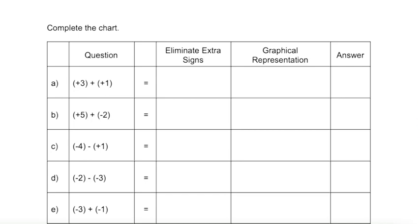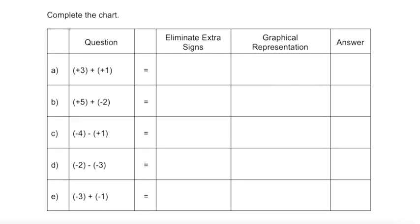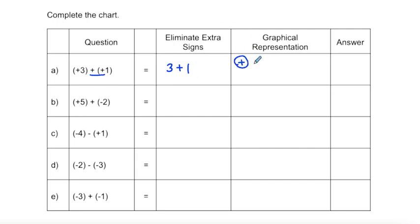Now let's look at what happens when we have both positive and negative with subtraction. The first thing we do is eliminate any extra signs. For example A, the plus sign in front of the integer isn't needed, so this just becomes three. The two plus signs beside each other make a plus sign — same signs replaced with a single addition — so this becomes three plus one, which equals four.